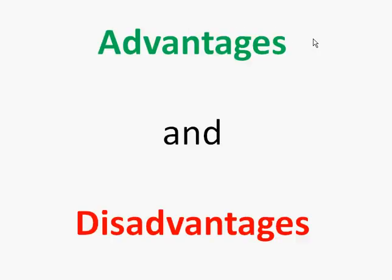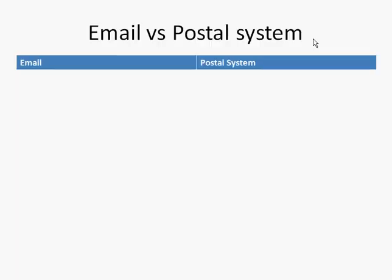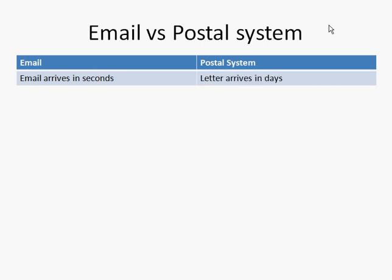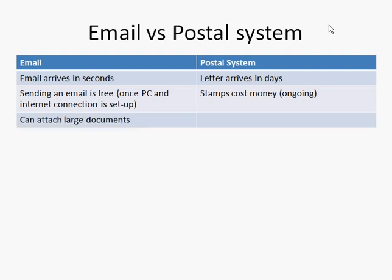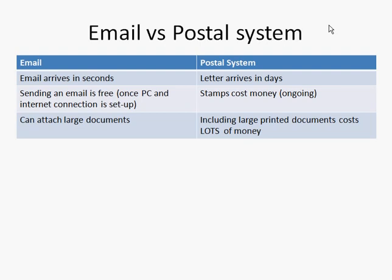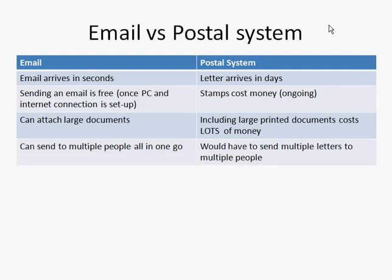Now for advantages and disadvantages — we're only going to look at email in this video. You often get asked to compare email to an alternative method, so here we'll compare it to the traditional postal system. Emails arrive in seconds, whereas letters take days to reach the recipient. Sending an email is free once you have your PC and internet connection paid for — there's no ongoing cost, whereas with letters you have to buy stamps. With email you can attach large documents, whereas including large printed documents in a letter costs a lot. You can also send emails to multiple people all in one go, whereas you'd have to send multiple letters.